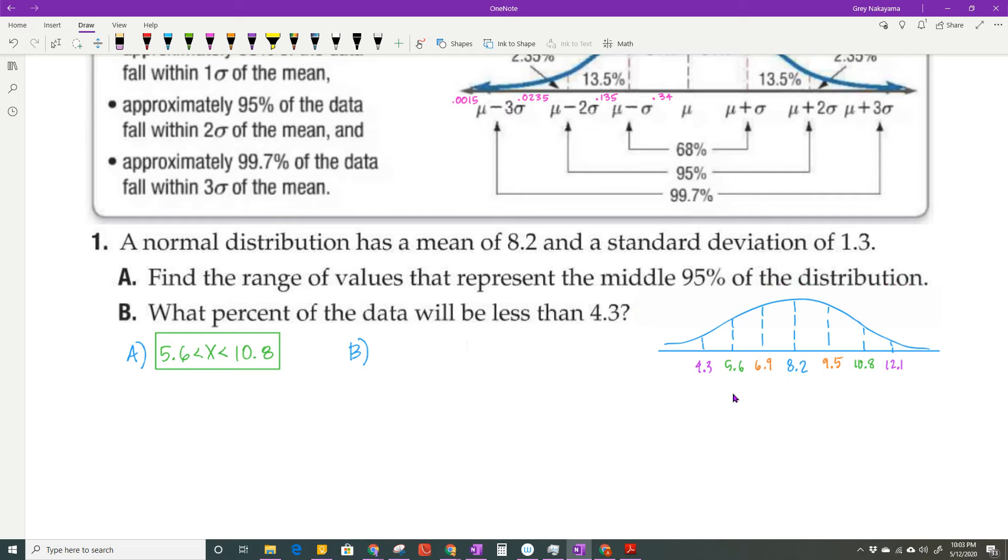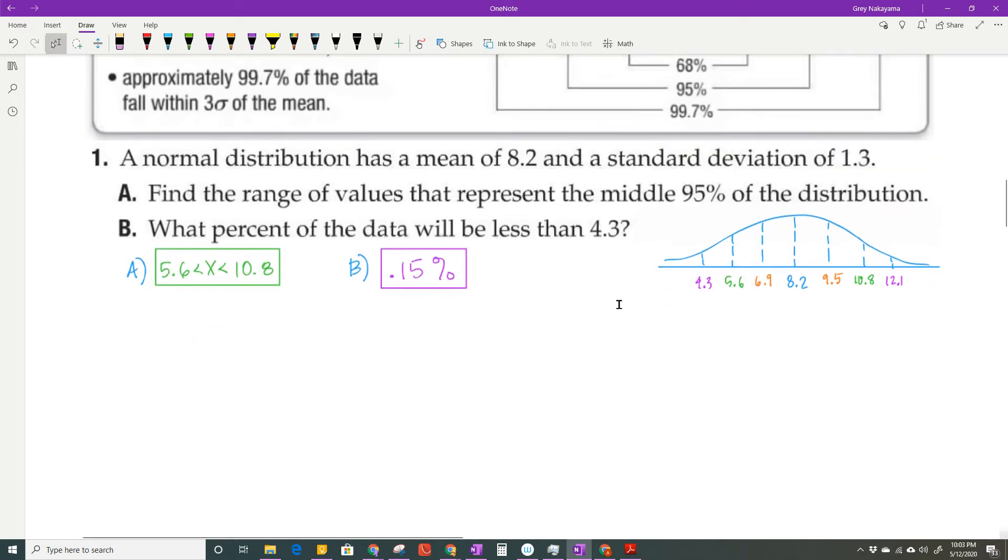Now, what percent of my data will be less than 4.3? 4.3 was three standard deviations. So they're asking what percent is over here. Well, that's what this number is right here. And if they ask me for percent, I have to change that decimal to a percent. And when I change it to a percent, you move it two places to the right. So my answer is going to be 0.15%.